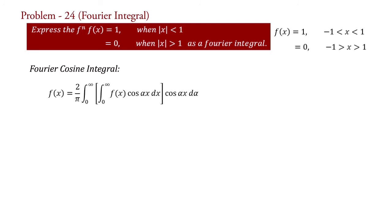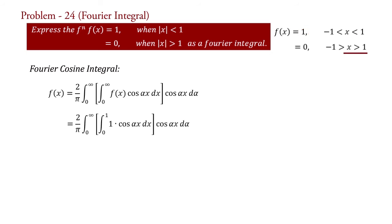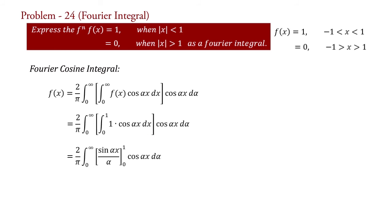That is, f(x) equals the Fourier cosine integral formula. Substituting the value of the given function, we get f(x) = (2/π) ∫₀^∞ [ ∫₀^1 1 · cos(αt) dt ] cos(αx) dα. Here f(x) = 1 in the interval 0 to 1, and for 1 to infinity it will be 0. Now, integrating cos(αt) gives sin(αt)/α, so we place sin(αt)/α evaluated from 0 to 1, multiplied by cos(αx) dα.